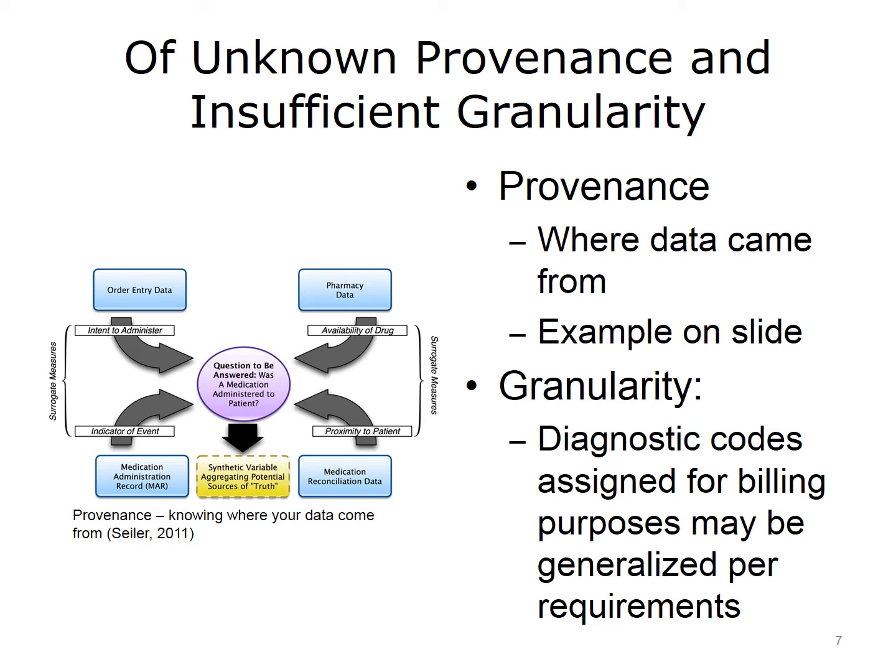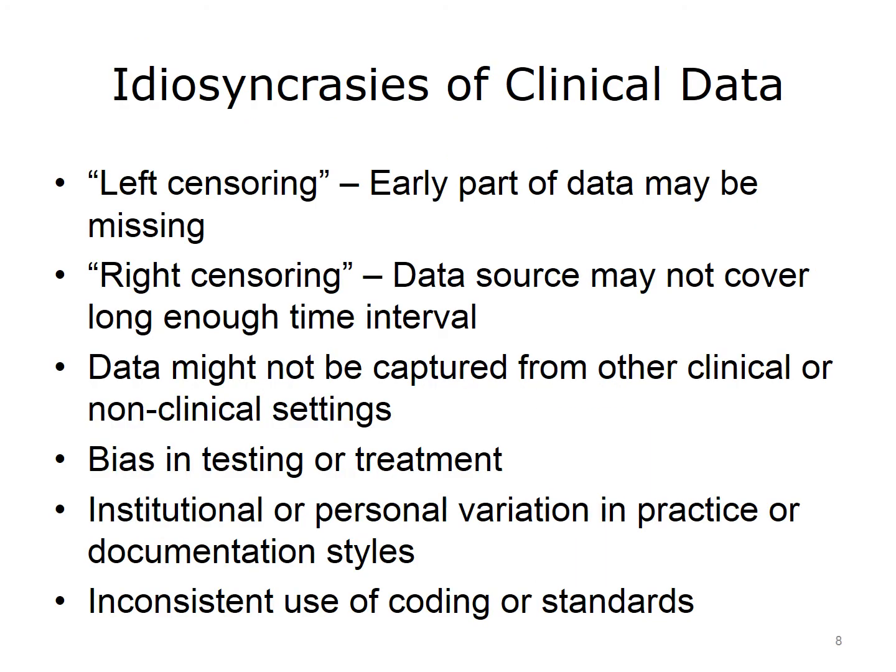In addition to provenance, there's also the problem of granularity. For example, diagnostic codes that are assigned for billing purposes may be generalized to a broader diagnostic class. An example would be when a patient with a set of complex cytogenic and morphologic indicators of a pre-leukemic state is described as having myelodysplastic syndromes, or MDS, for billing purposes. But this data would be insufficient for other purposes, such as research, where a more specific diagnosis would be required.